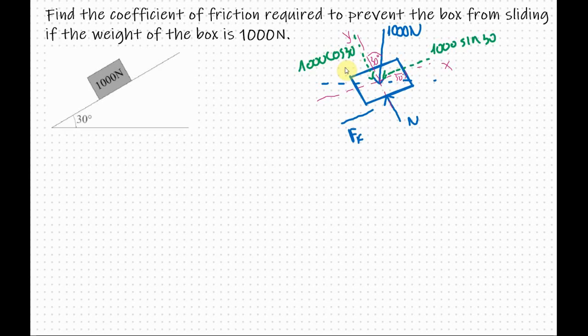What else do we have? The box wants to move downhill. So if the box wants to move downhill the friction is opposing that. So friction will go up the hill. So here is the direction of our friction force.